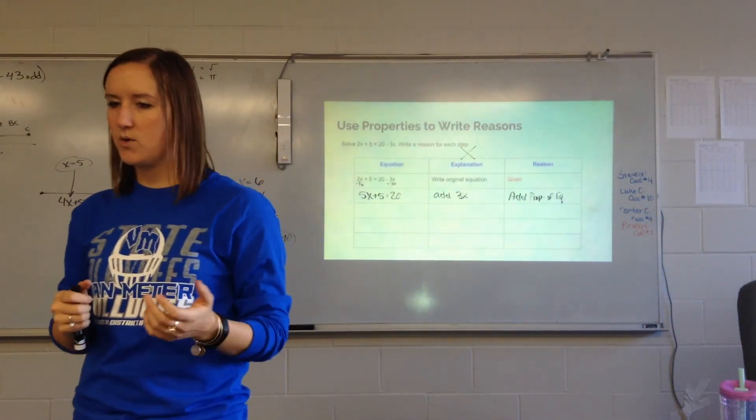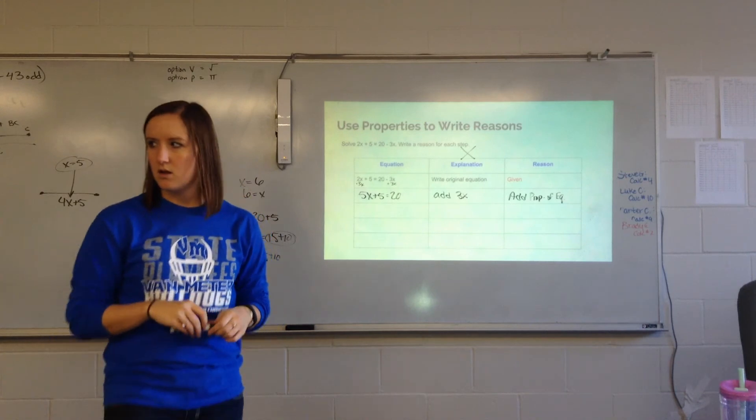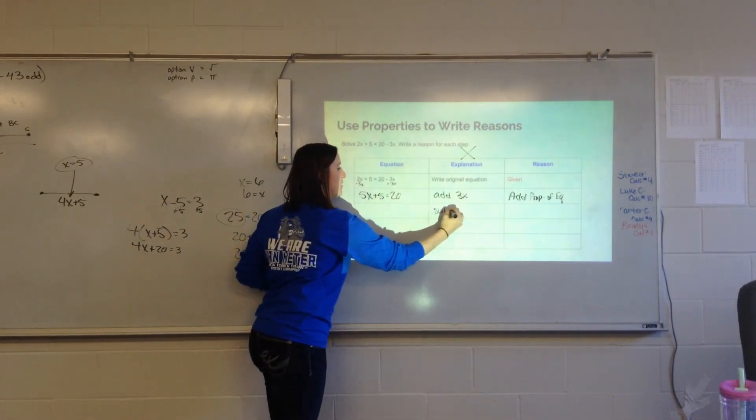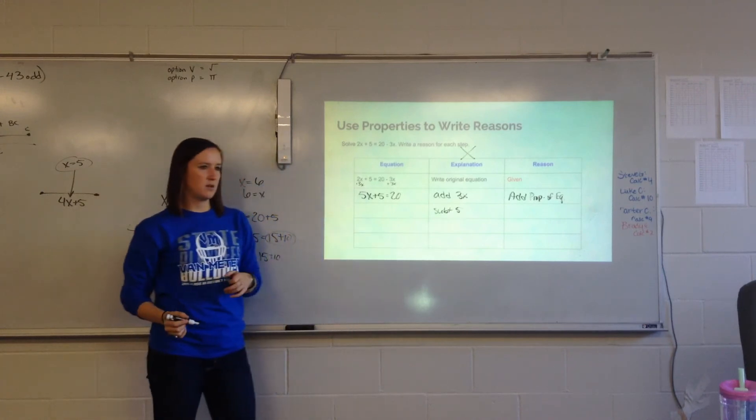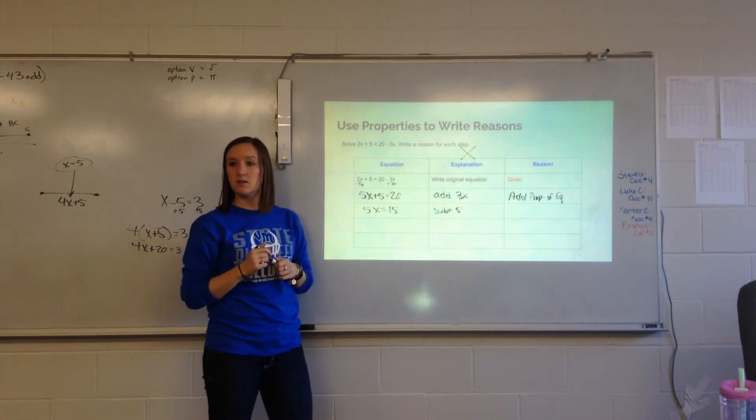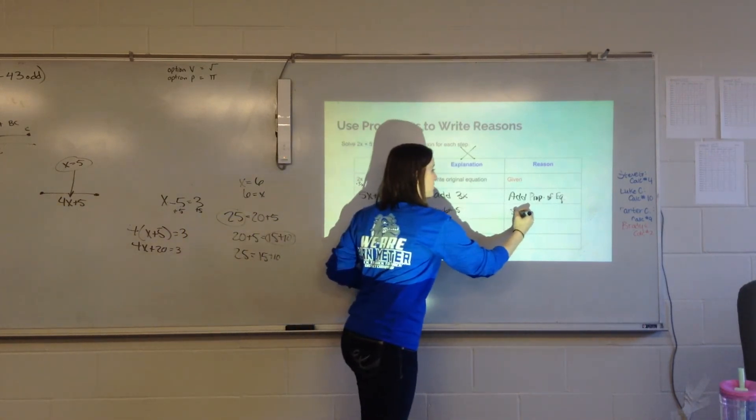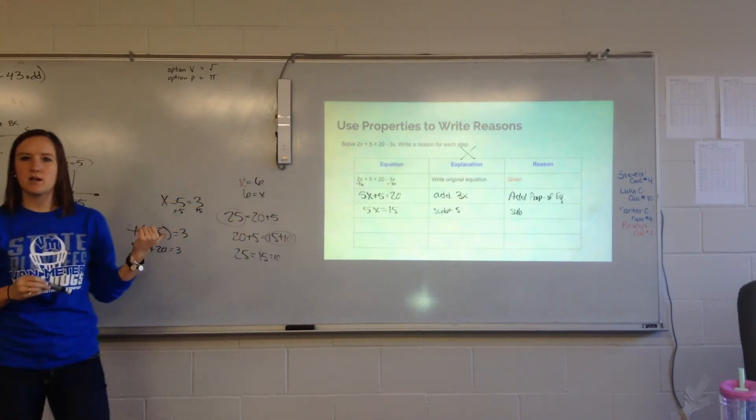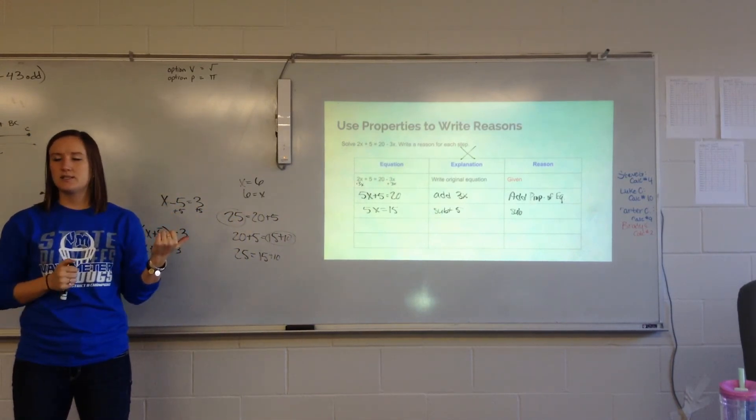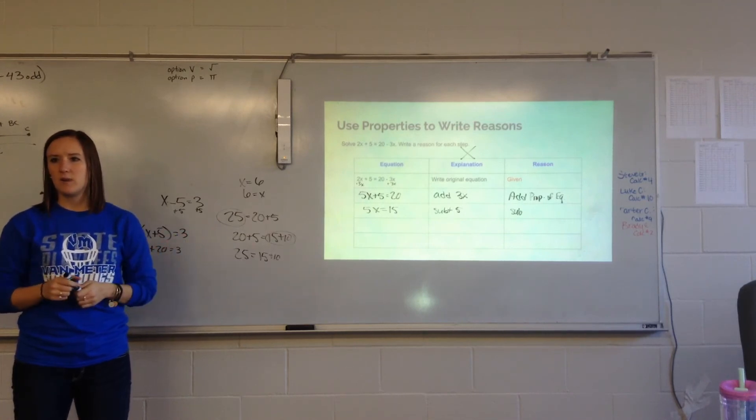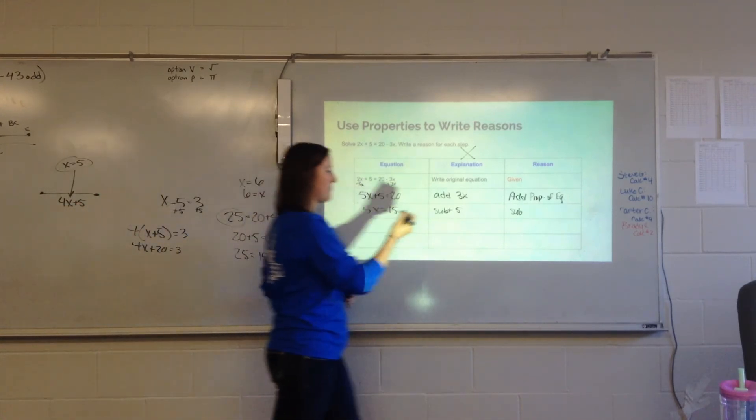So, what's the next step that we do in our equation? Subtracting 5. So, we're subtracting 5. Subtraction property. What did you say it was? Subtraction property. Now, if I just put sub, what other property am I going to get mixed up with? Substitution. So, we need to add a couple more letters. What can we add? T. I'm fine with that.